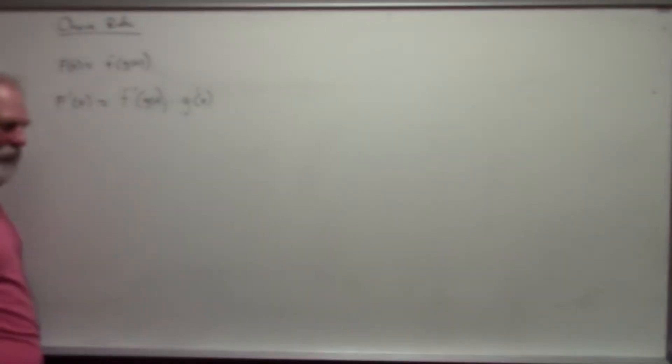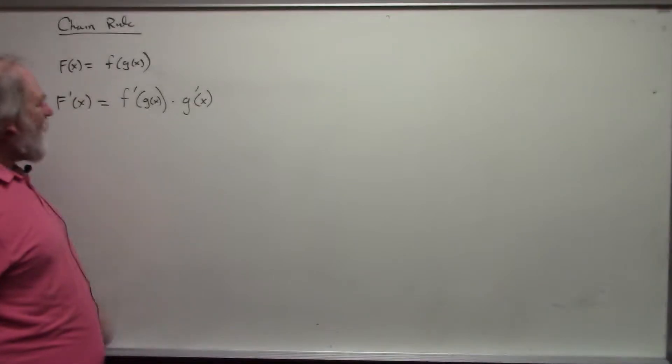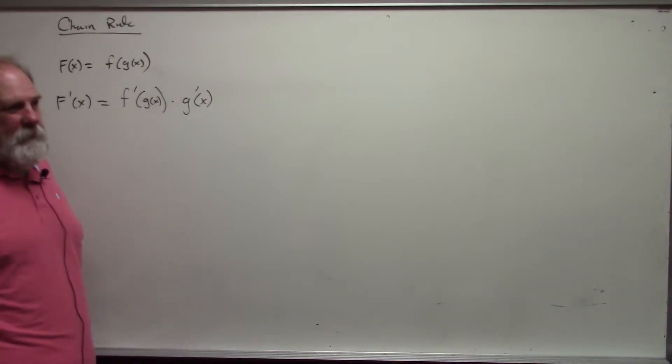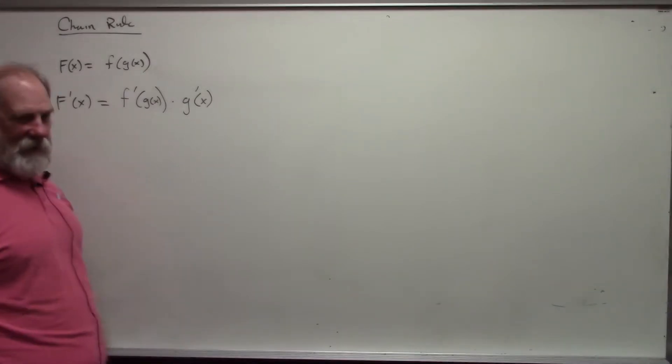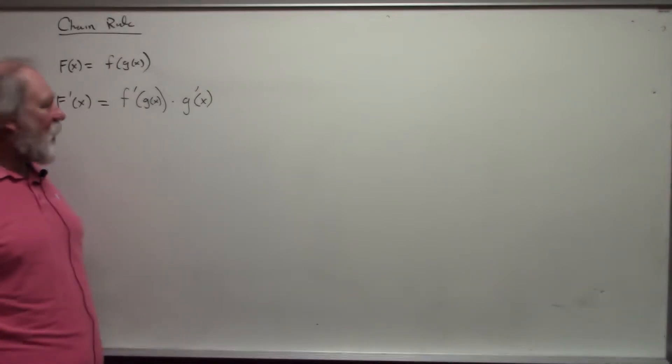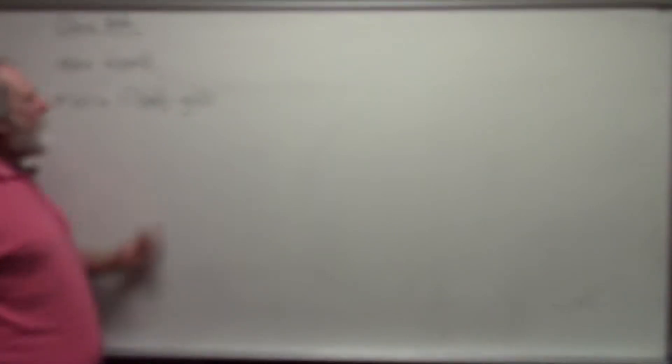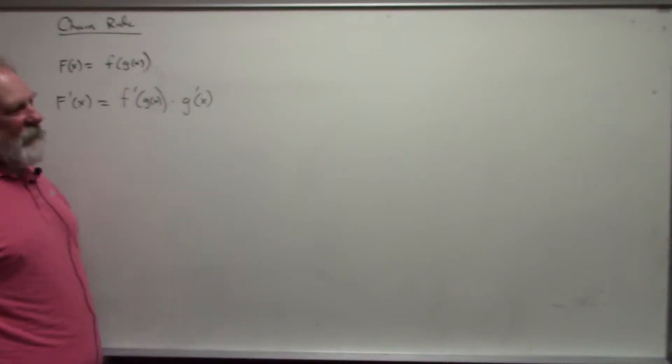Think of this as like peeling the layers of an onion. You take the derivative of the outside function with the inside being exactly the same — you don't touch that, you don't change that — times the derivative of the inside function.